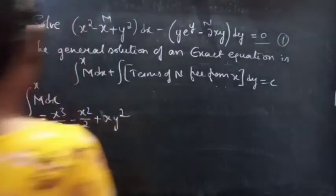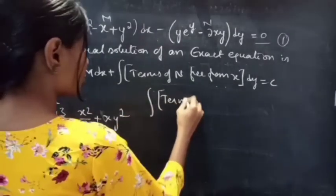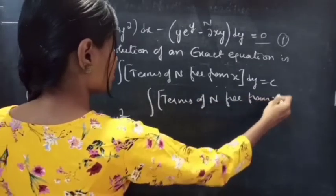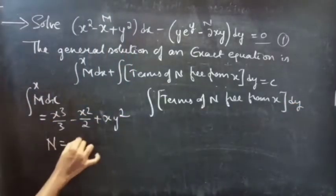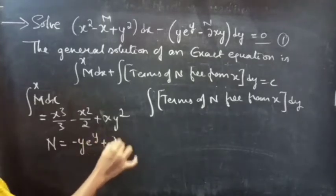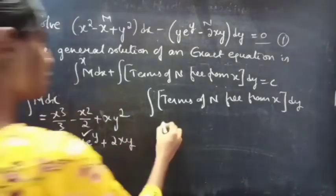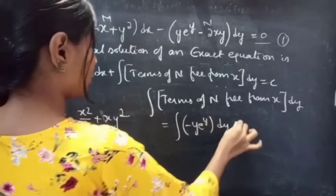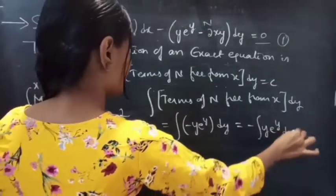Now consider the second integral — the integral of terms of N free from x dy. We have N equals minus y e^y plus 2xy. The term free from x is minus y e^y. So we need to evaluate minus the integral of y e^y dy.